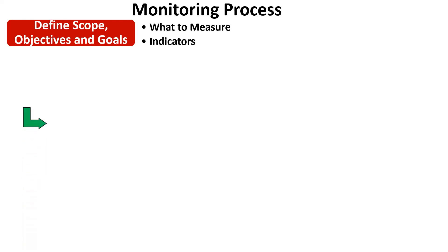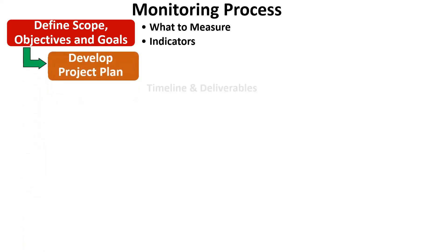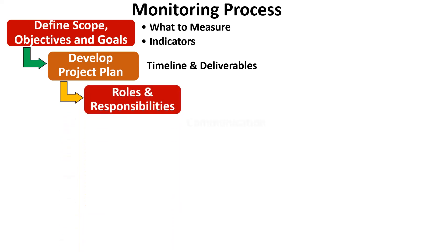Second, we need to develop a detailed project plan that includes the timeline, milestones and deliverables. This project plan can then be used as a basis for tracking progress during project implementation. If there is already an existing project plan, we can use it to compare actual progress and resource utilization with the plan. Third, it is important that clear roles and responsibilities are assigned to team members, and communication channels are established to ensure everyone is aware of their responsibilities and there is a continuous flow of information regarding the project, its issues and progress.